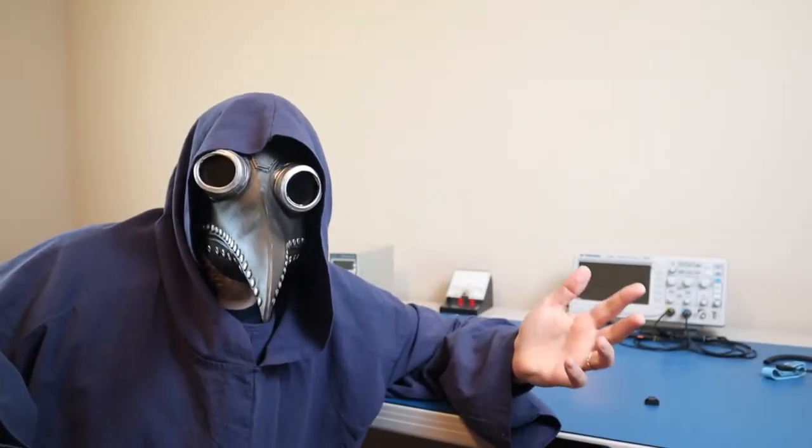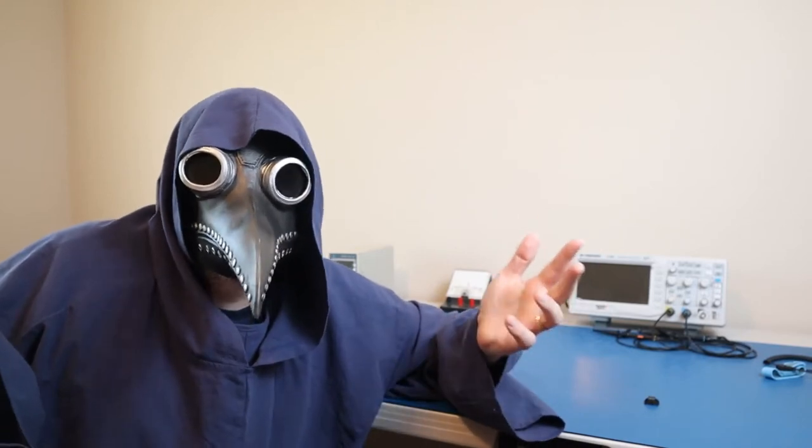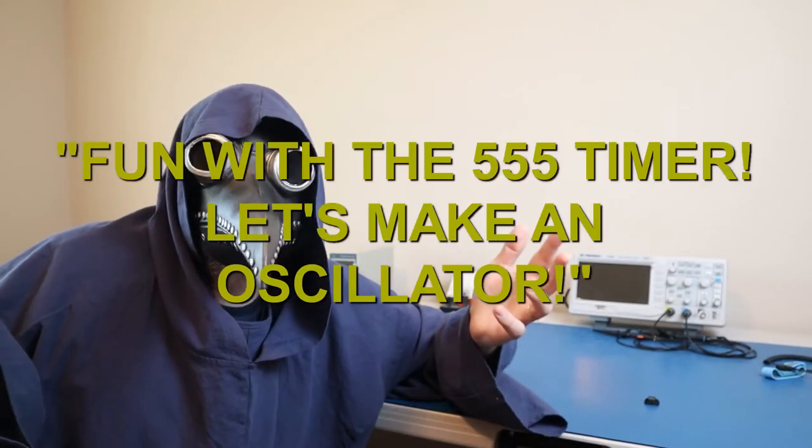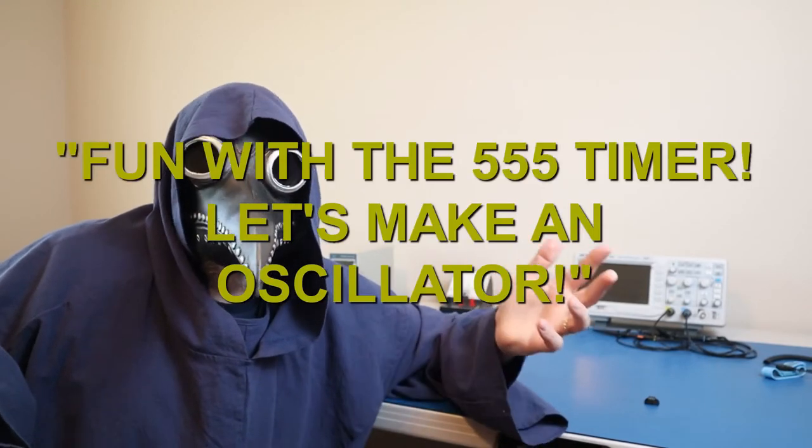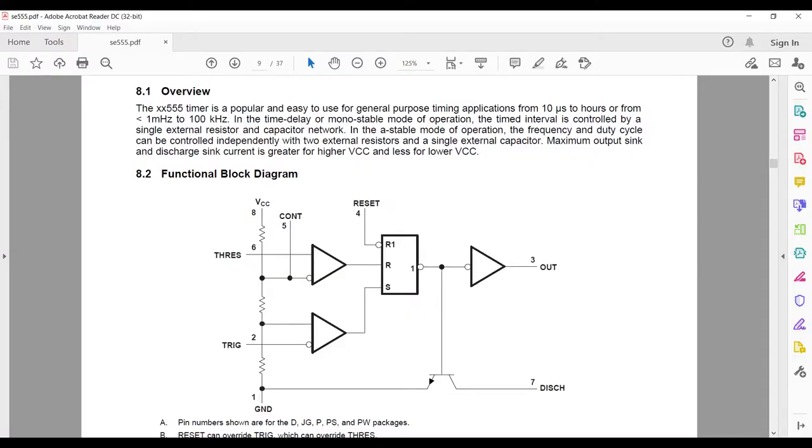So, the 555 timer has several modes of operation, including Astable, Monostable, and Bistable. Today, we will be looking at the Astable mode, which can be used to create an oscillator, or clock signal. First, let's take a look at what the 555 timer IC is. This is a block diagram from the datasheet, and you can see it has 8 pins. Let's draw this on the board, and see if I can explain how it works.